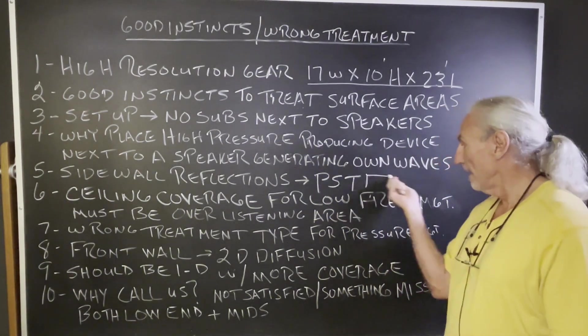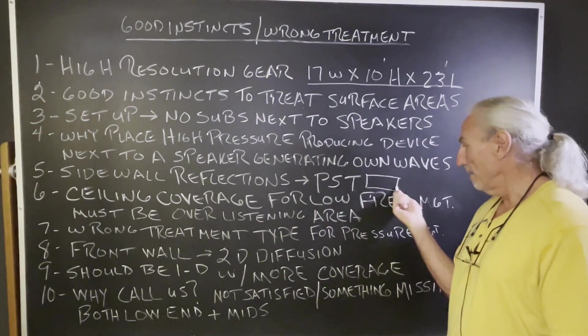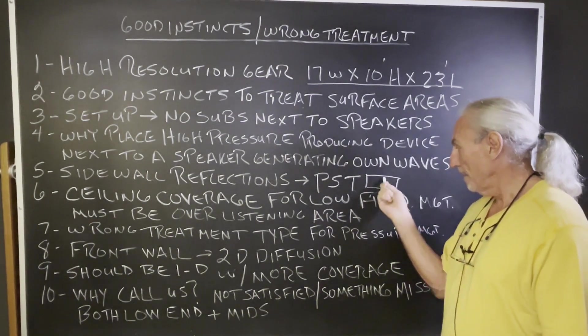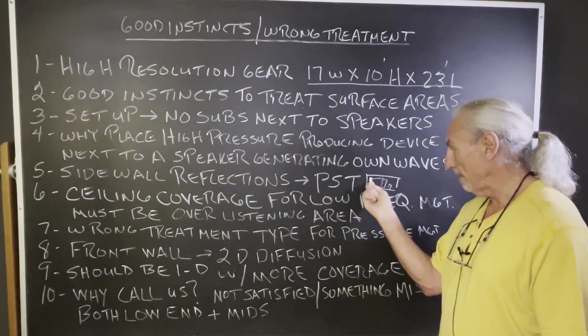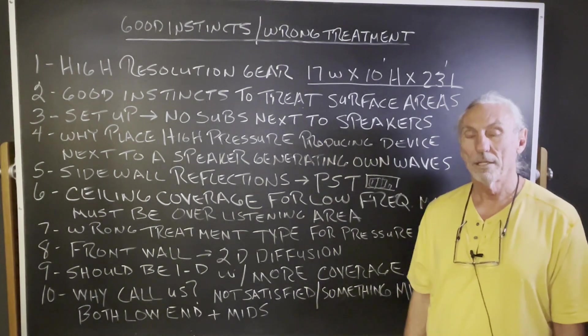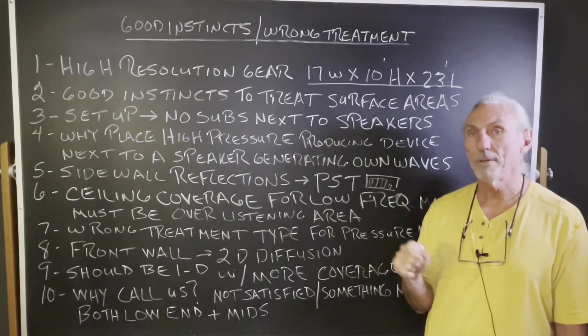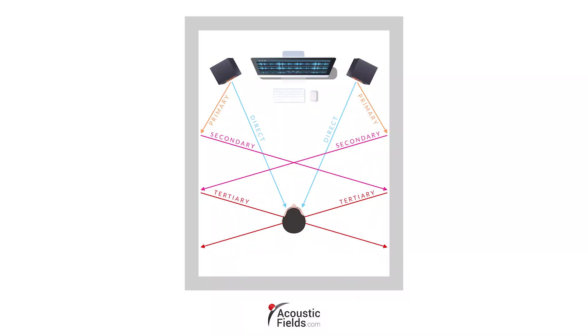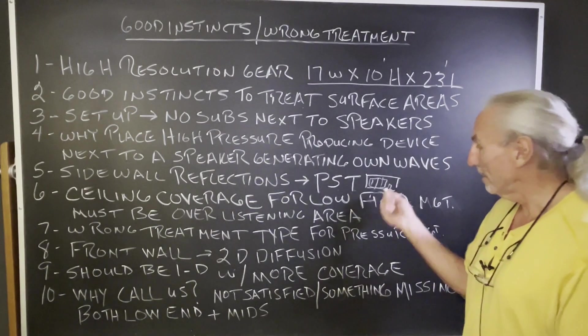And we need to extend that treatment. Remember, if this is the speaker, we need to extend the treatment all the way down past the listening position to get all three reflections. Remember, there's primary, secondary, and tertiary. Look at this graphic. You can see how they work. Primary starts on one wall, travels across the room, becomes a secondary. Secondary travels back to its original source wall, tertiary. All three of those time signature reflections must be managed if you're going to get a strong center focus.